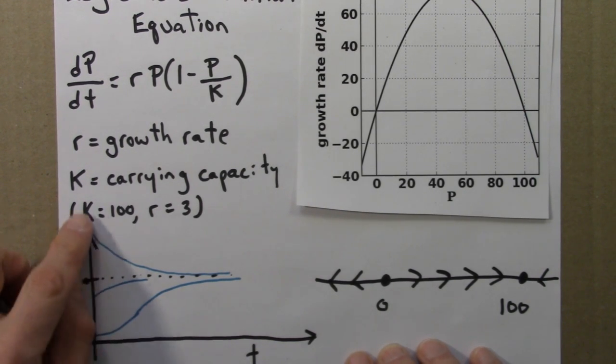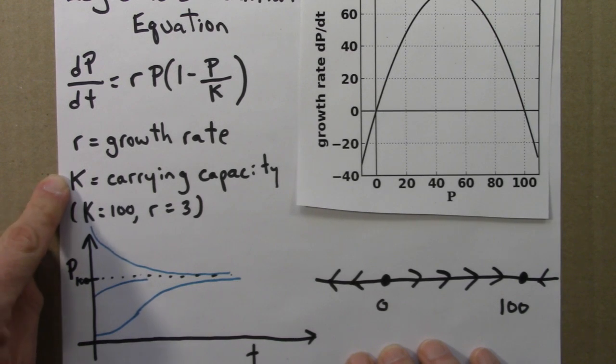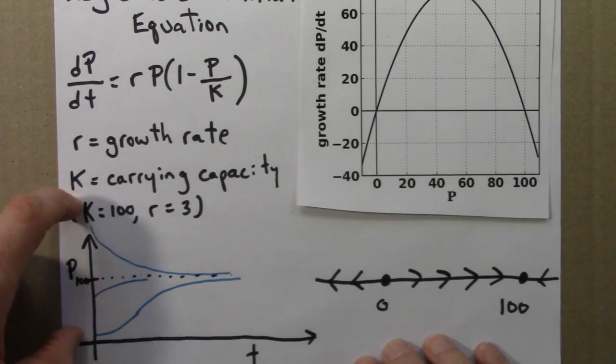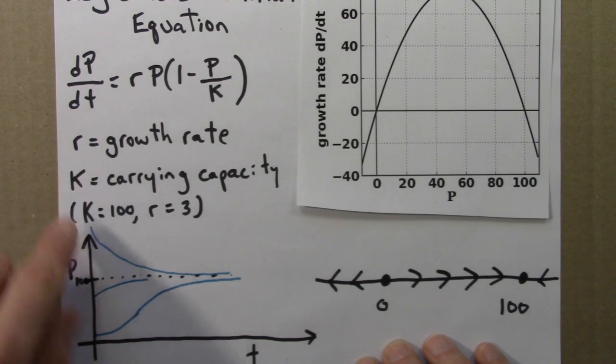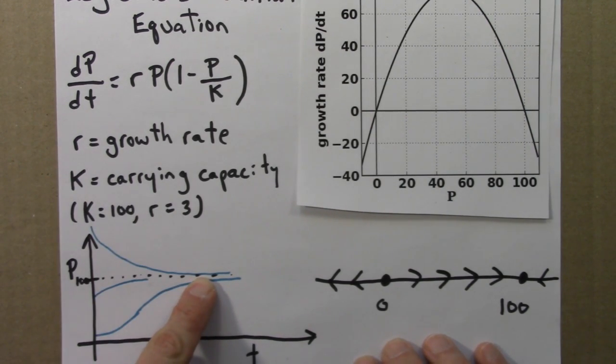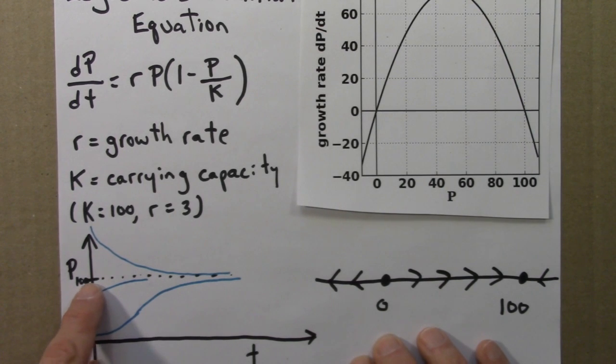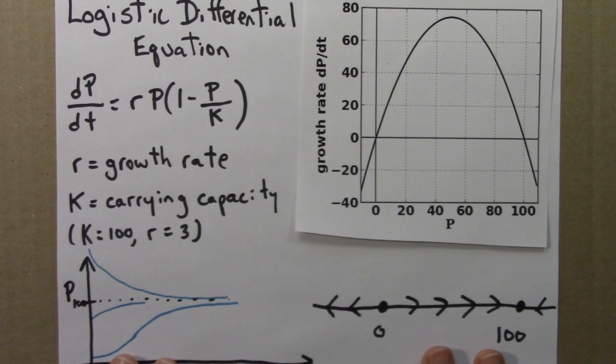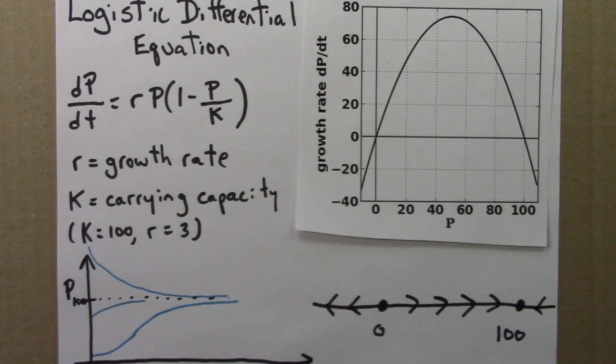So, lastly, let me say a little bit about this quantity K, why it's known as carrying capacity. Well, this equation says that any population, positive population, any real population you start off with, is going to go to 100. So, 100 is, in a sense, the equilibrium population. It's the number of creatures that the system, whatever it is, can support. Okay. So, this is a qualitative approach to solutions of the logistic equation.